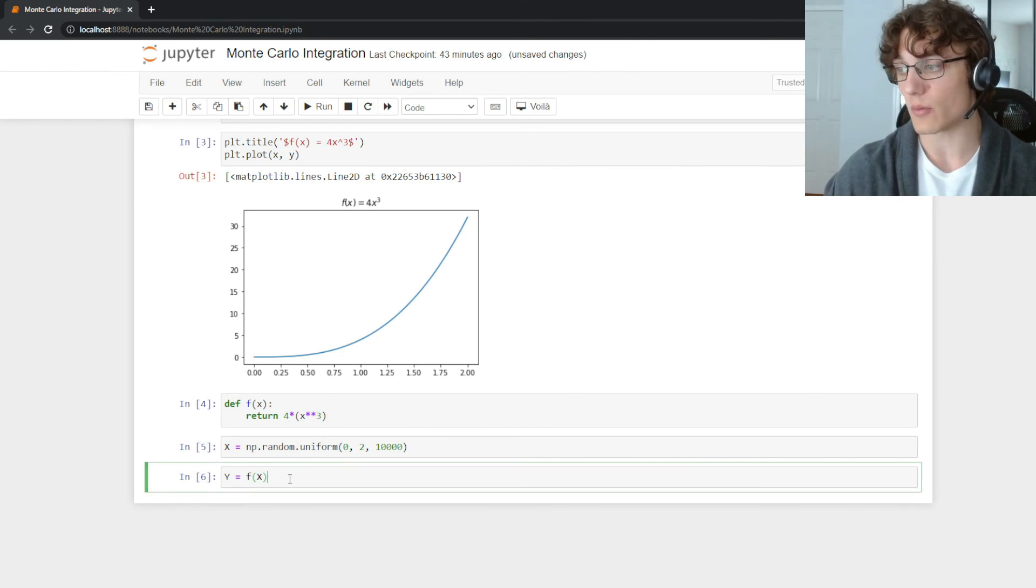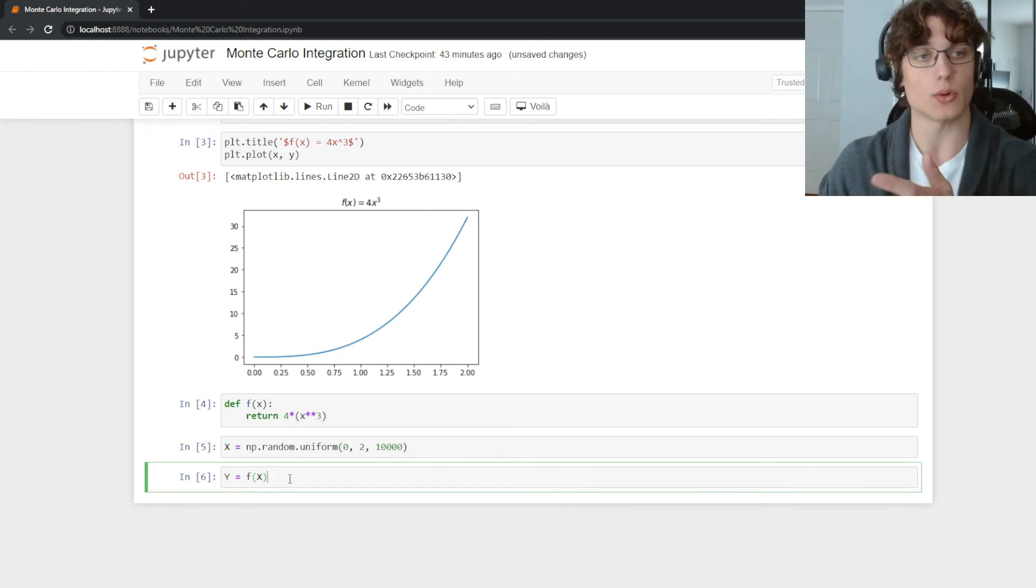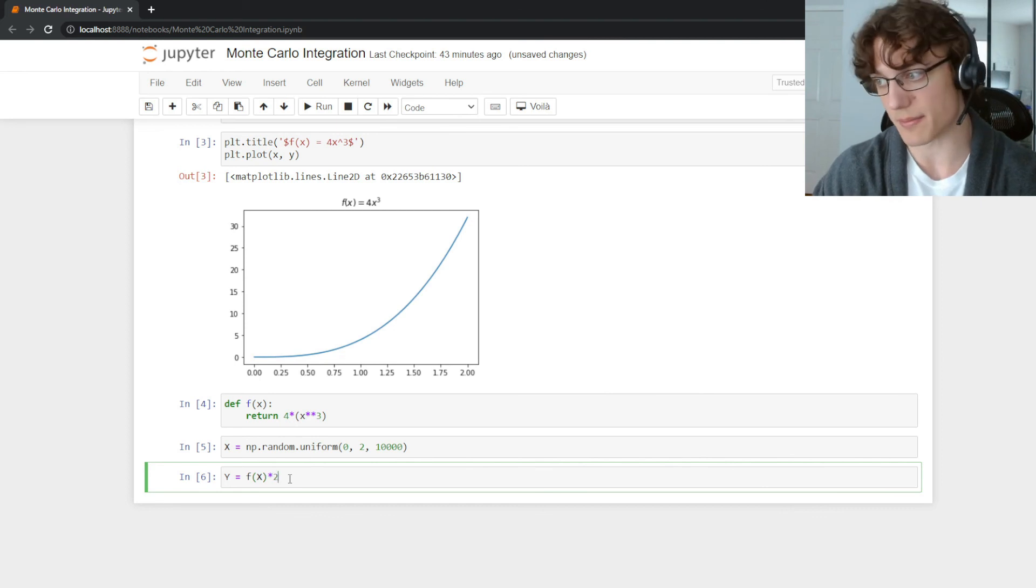And now all we need to do to develop the areas of these rectangles that we have for each of the samples is multiply it by that b minus a. In this case b is 2, a is 0, thus b minus a is simply 2. So we can just multiply this entire series by 2.